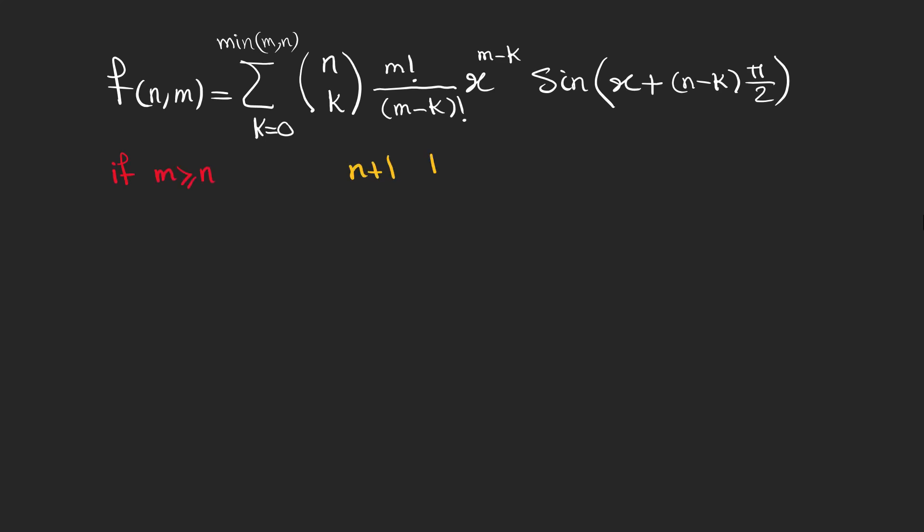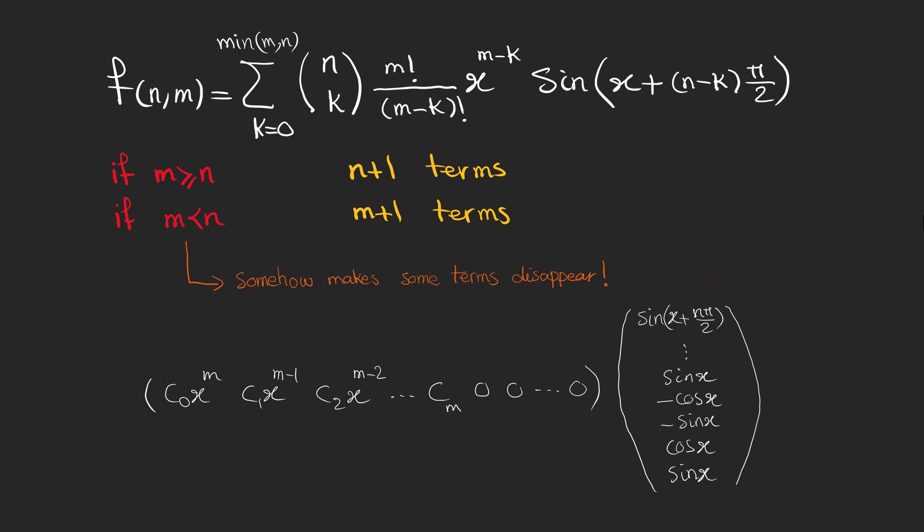So, if m is bigger than or equal to n, we will have n plus 1 terms. But if m is less than n, there would be m plus 1 terms. In this case, some terms will disappear. I'm just thinking of a kind of 1 by n plus 1 matrix multiplied by an n plus 1 by 1 matrix. And I wonder if this function has any computational functionality. Okay, I don't know, but it might have something. I'm just thinking about it.